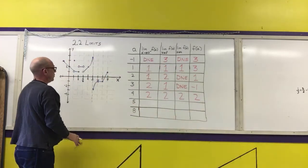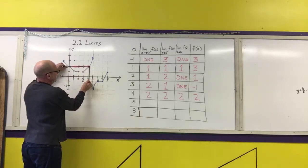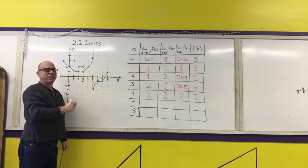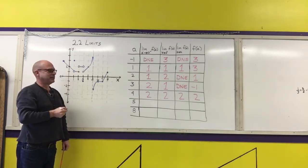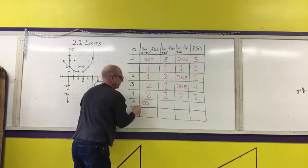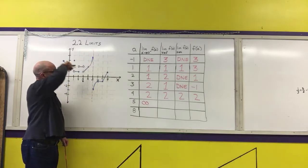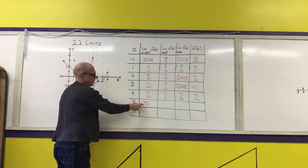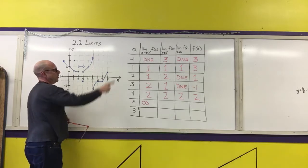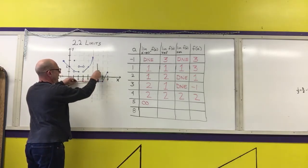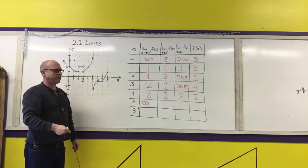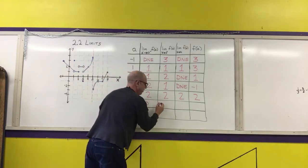For x = 5: approaching along the graph, the y-value is approaching an asymptote and going up without bound — it's not approaching a single number. So the limit does not exist. However, we need to explain why, so we write the infinity symbol to indicate it's approaching positive infinity. Approaching from the right, the y-values get smaller and smaller, approaching negative infinity — also not a single value — so the limit does not exist, and we state why.